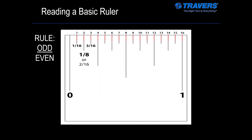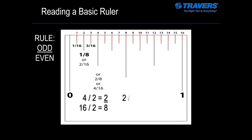The next line is under the three — that's three sixteenths. We're odd over even, so we're fine. Next number is four, so we have four sixteenths — that's not going to work because we have an even number over another even number. So let's do the math: four divided by two equals two, sixteen divided by two equals eight. Two eighths is not odd over even, so let's do it again. Take the two, divide again by two and we have one. Then take the eight, divide by two and we have a four. Now we have odd over even — one quarter.